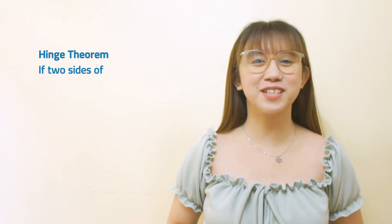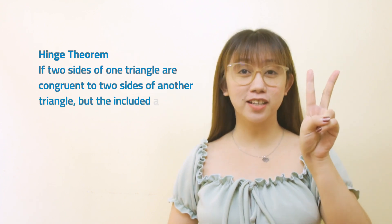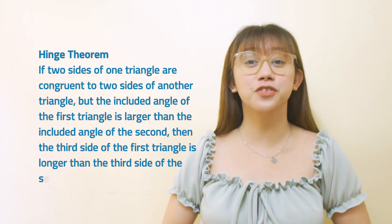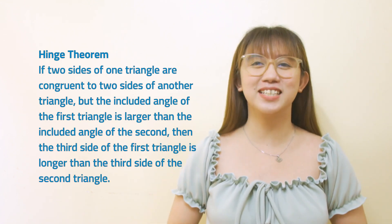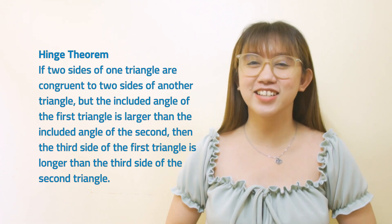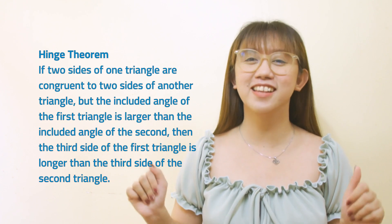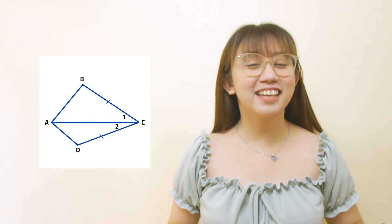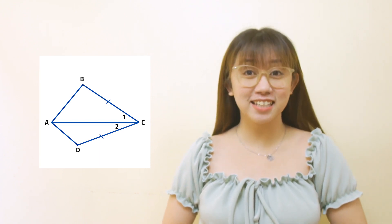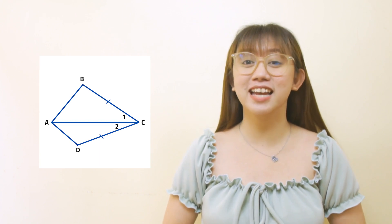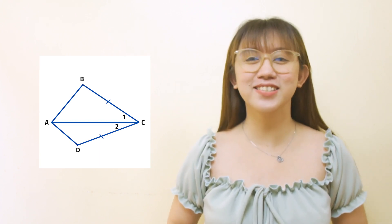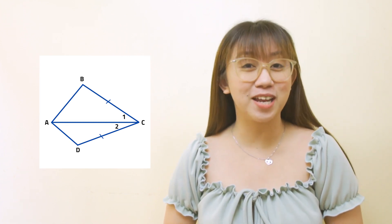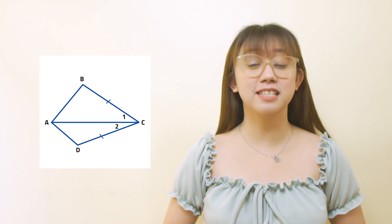The hinge theorem tells us that if two sides of one triangle are congruent to two sides of another triangle, but the included angle of the first triangle is larger than the included angle of the second triangle, then the third side of the first triangle is longer than the third side of the second triangle. In triangle ACB and triangle ACD, side BC is congruent to side BC, side AC is congruent to side AC, and angle 1 is greater than angle 2. Using the hinge theorem, side AB is greater than side AD.